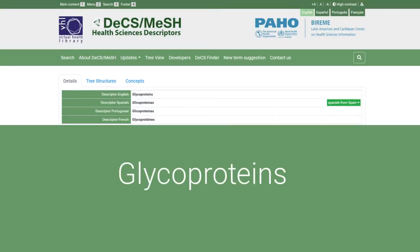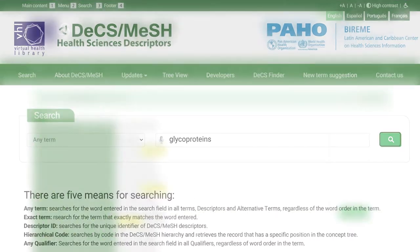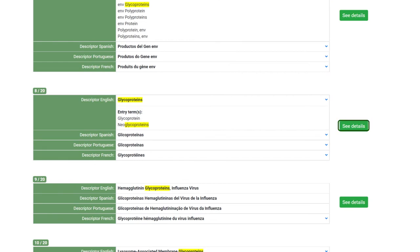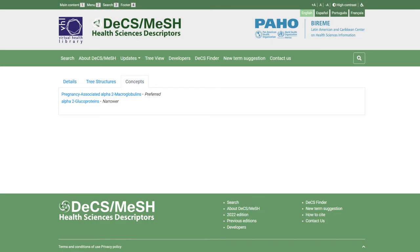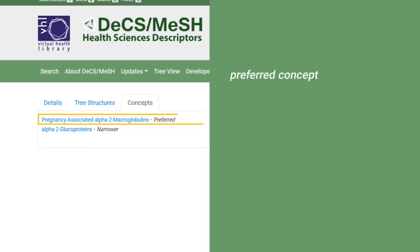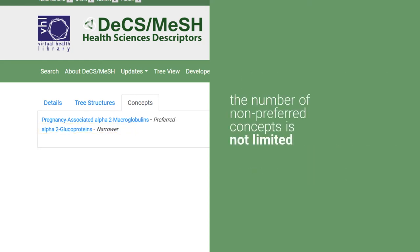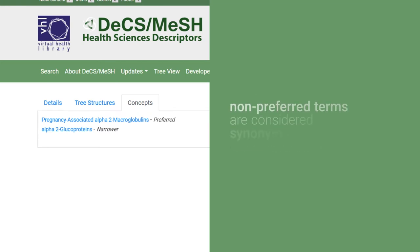To explore the concepts tab, the example of the descriptor glycoproteins will be used. Enter glycoproteins in the search field and press the 'See Details' button. Clicking the concepts tab shows the concepts that make up the record. In this example there are two concepts: a preferred concept, which is the descriptor mandatory in all records, and a non-preferred concept that has a more specific relation to the descriptor. The number of non-preferred concepts is not limited. Non-preferred terms within each concept in the record are considered synonyms or alternative terms of the preferred term for that concept.